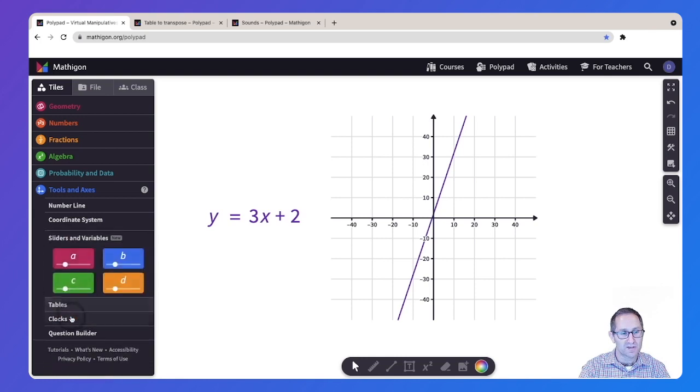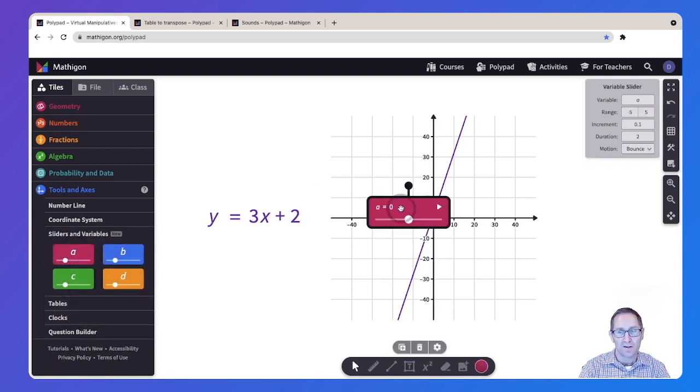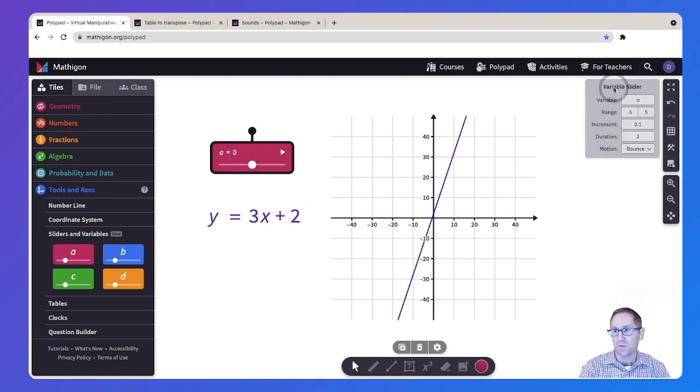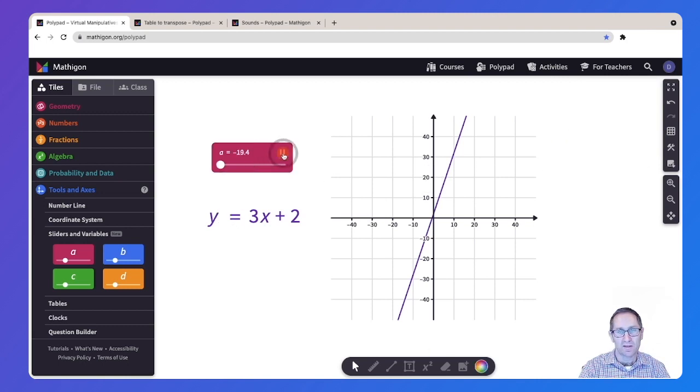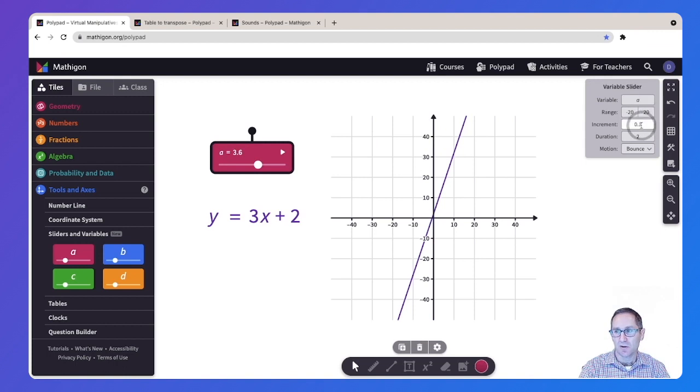What is new are the sliders and variables. So I'll put an A variable and slider on the canvas. You can see when I click on the variable, an options menu appears in the upper right. I'm going to change my range from negative 20 to 20. I will have it bounce. So I'll keep everything else the same. When I click the play button, you can see that the values of A are changing between negative 20 and 20. When I pause it, you can see it's going up by 0.1 and the duration is two seconds.